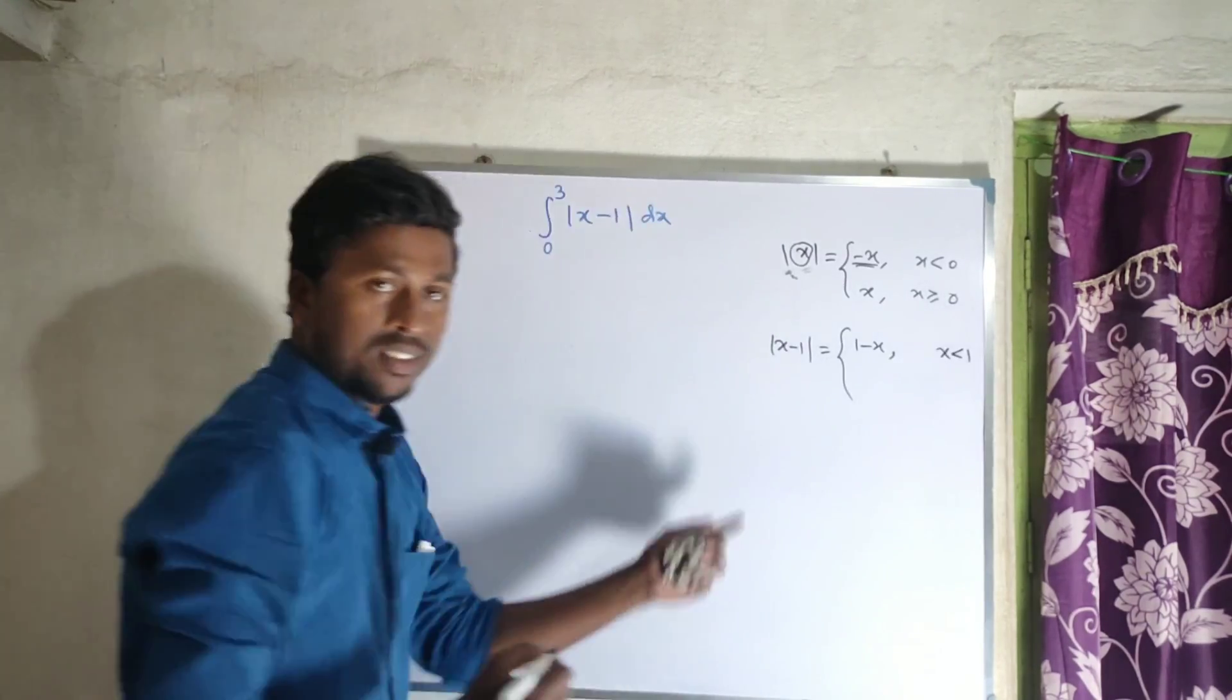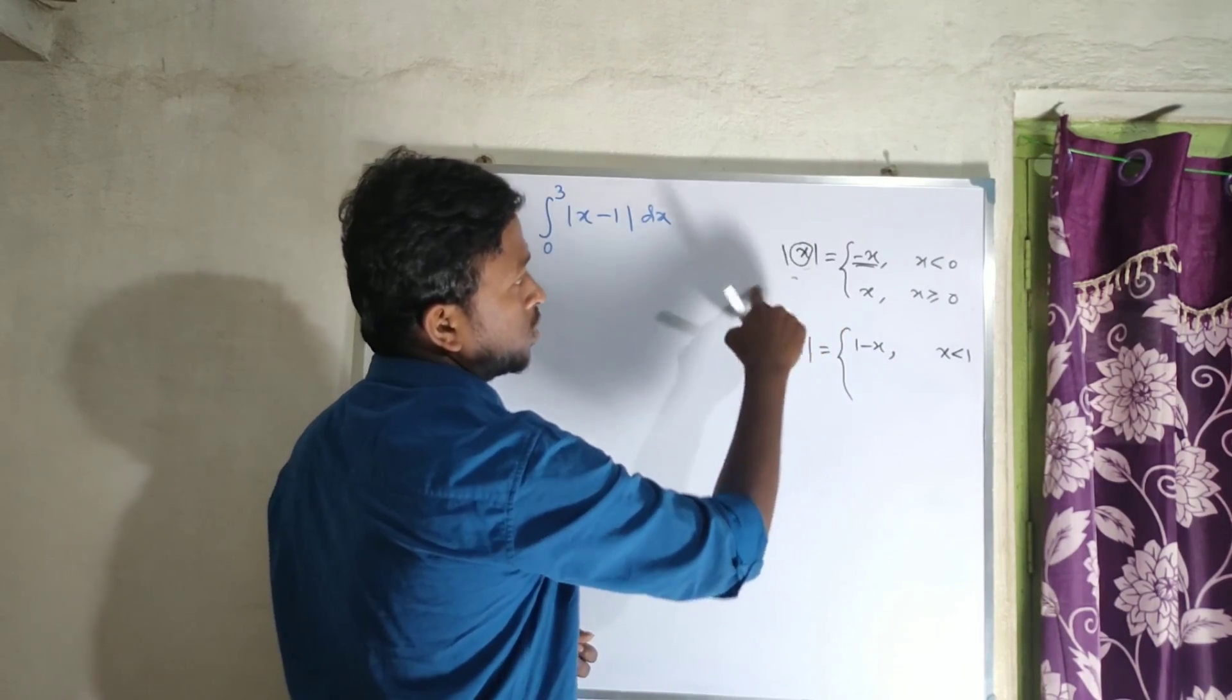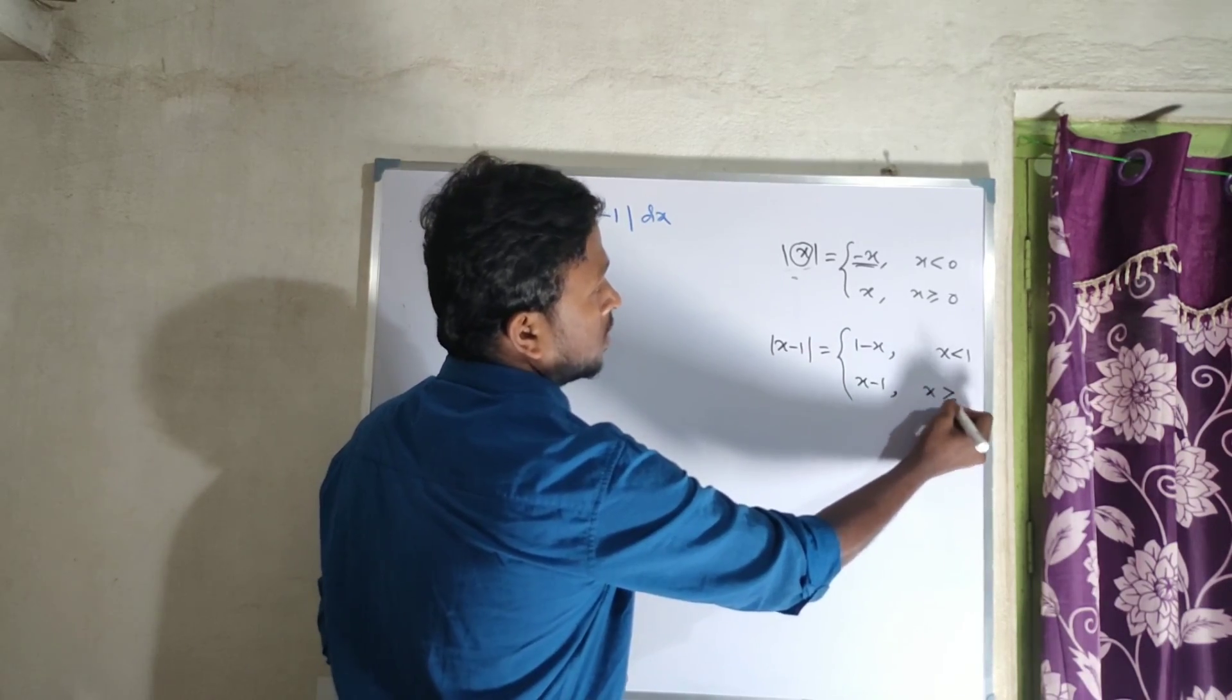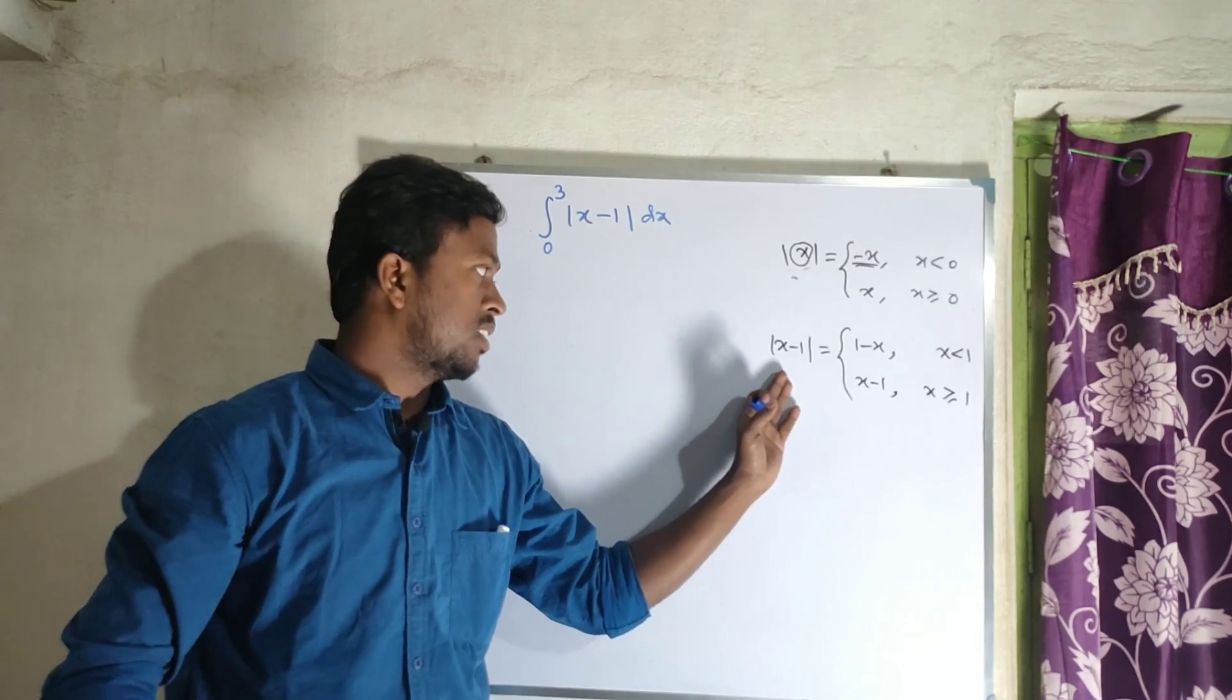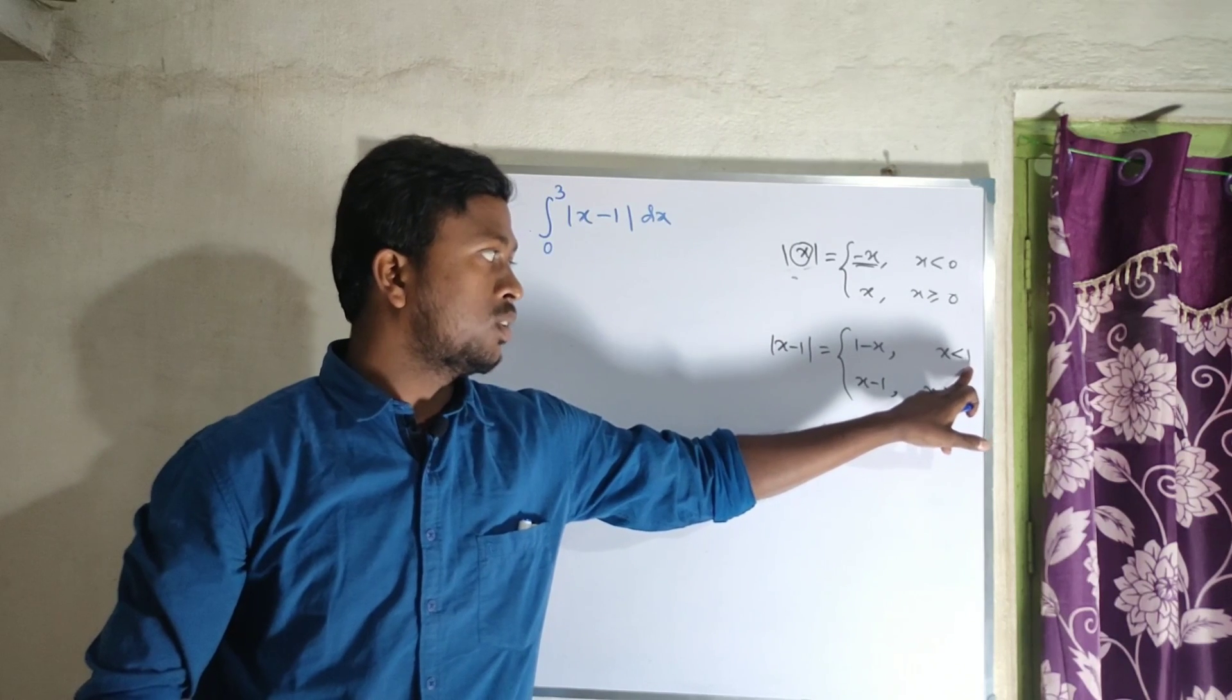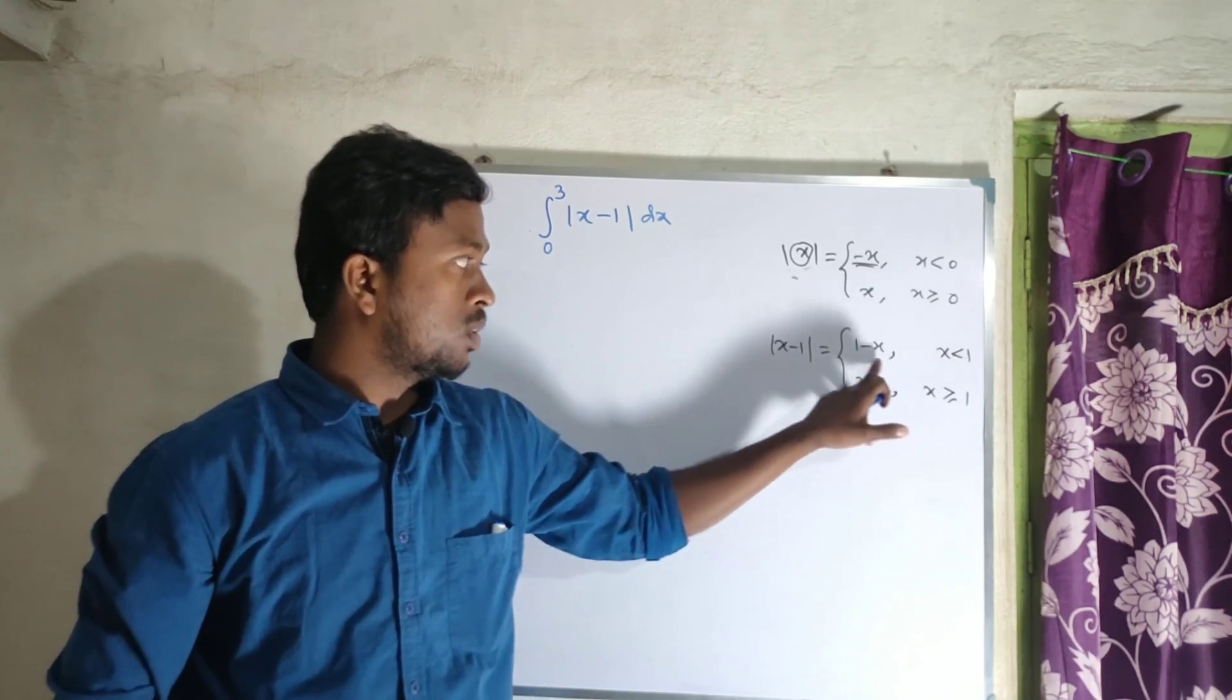The second part will be just x minus one when x is greater than or equal to one. So here we can see that x equals one is the breakpoint where mod x minus one breaks.